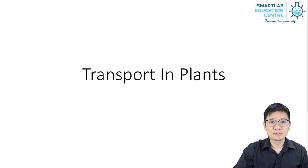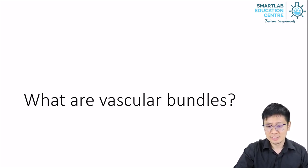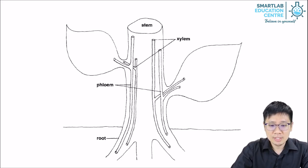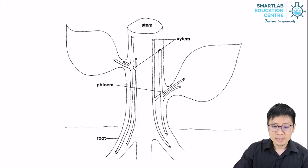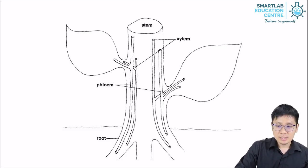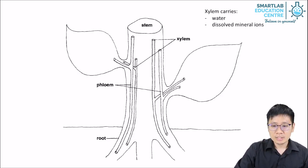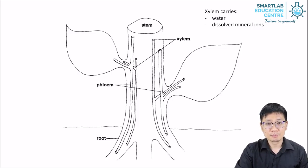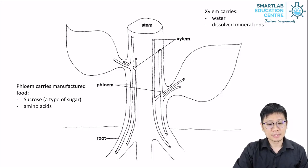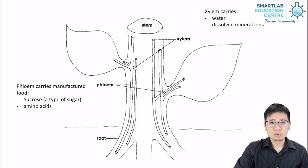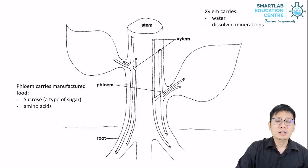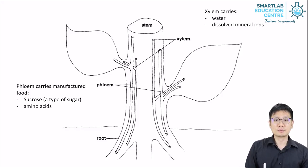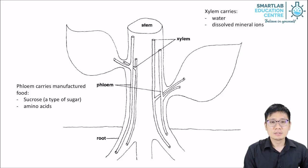This section is about transport in plants, focusing on vascular bundles in greater detail. Vascular bundles can be found in the leaf, the stem, and the roots. They consist of two types of vessels: xylem and phloem. The xylem carries water and dissolved mineral ions, whereas the phloem carries manufactured food — sugar, most importantly sucrose, and amino acids. Sucrose is formed from glucose, which is produced in photosynthesis. Before being loaded into the phloem, glucose must first be converted into sucrose.